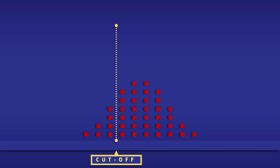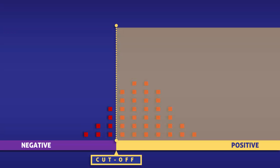This yellow line represents a cutoff level for our test. To the left of the line, the test returns negative, and to the right, it returns positive.